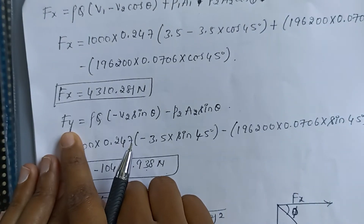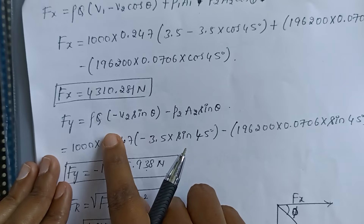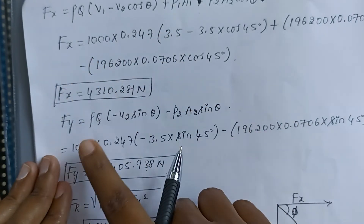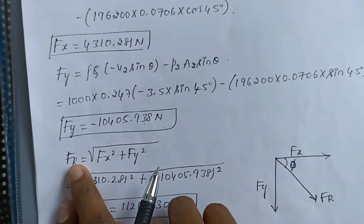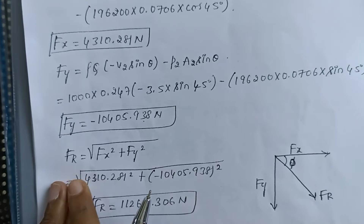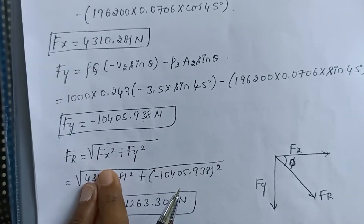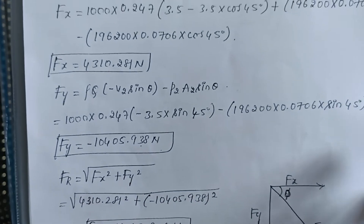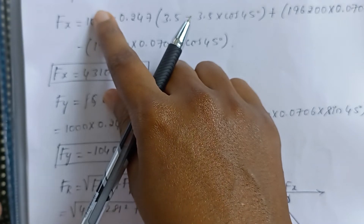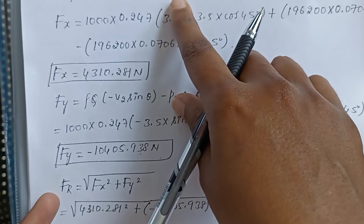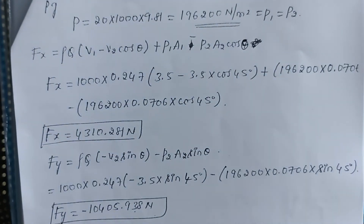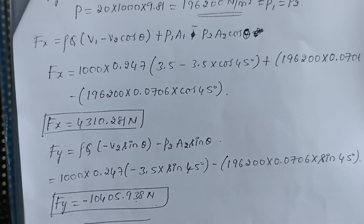Similarly, Fy is given by: rho × Q × (−v2 sin theta) − p2 A2 sin theta. Once Fx and Fy are found, the resultant force FR = sqrt(Fx² + Fy²). To find Fx and Fy, we need Q, v1, v2, p1, A1, p2, and A2. That is why we found Q in the very first step.